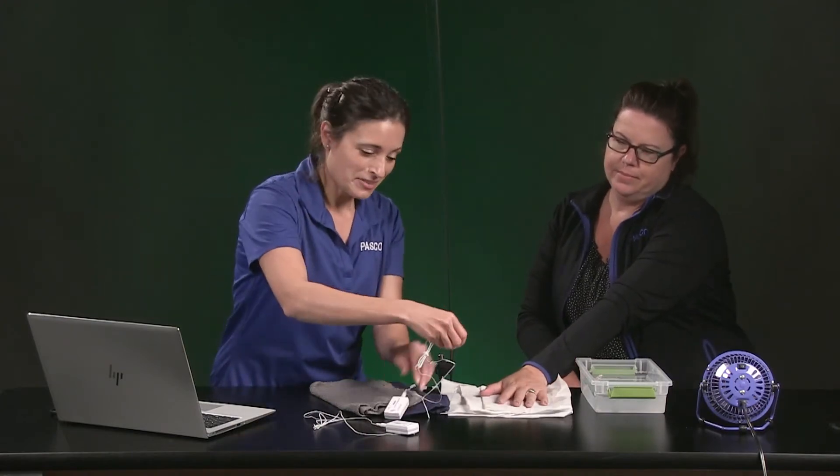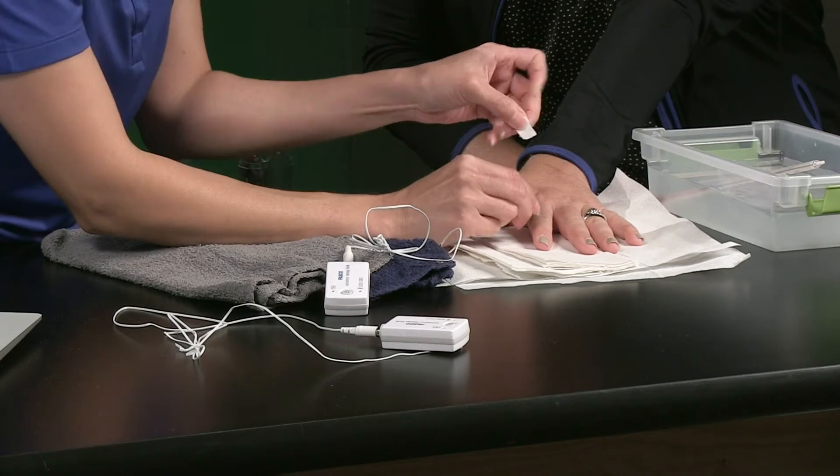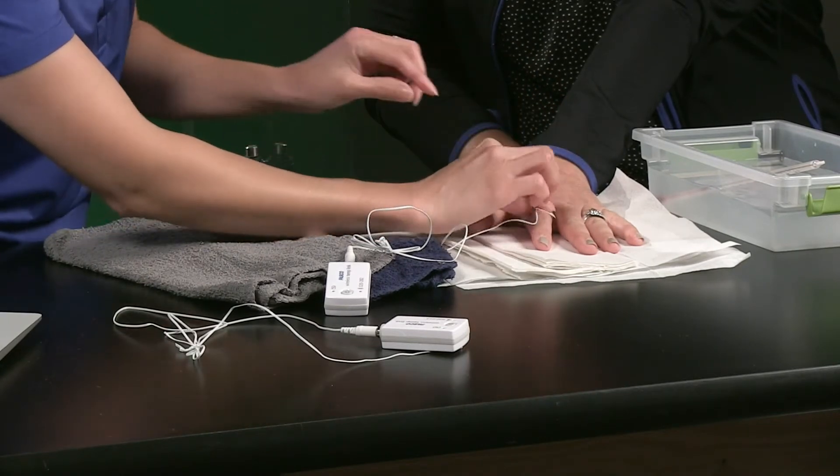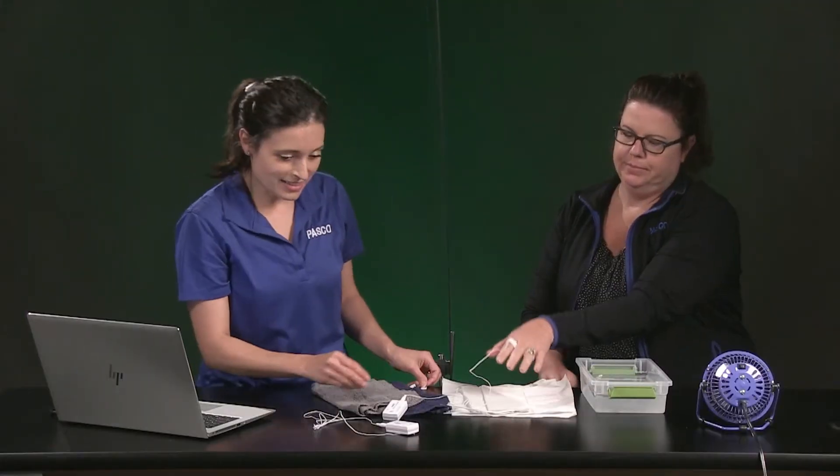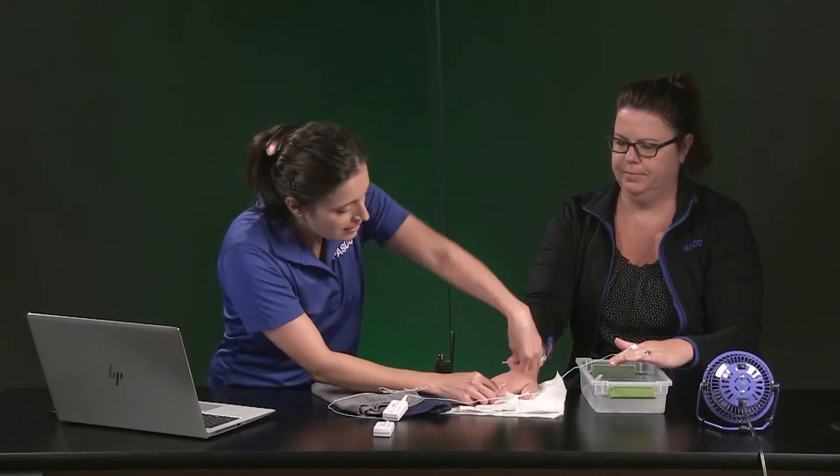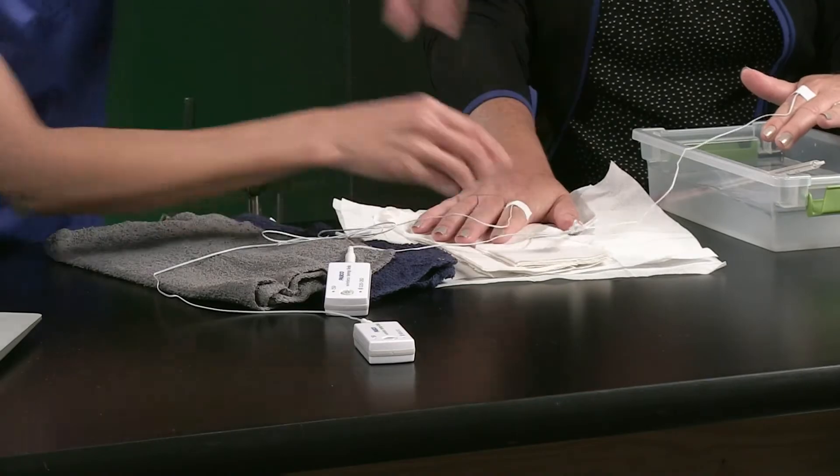Let's attach the left temperature probe to the left hand with a piece of tape right here and the index finger by the knuckle. Does that feel like it's going to stay? Yeah, that's good. Alright. We'll do the same on the right hand. Here's the right side temperature sensor. Does that feel good? Yeah. Okay. We're good.